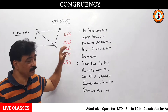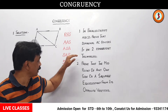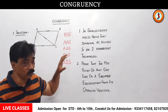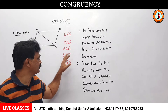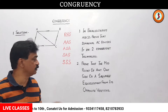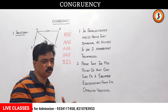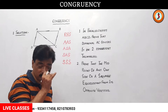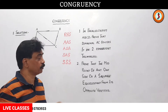AAS — angle, angle, side. ASA — angle, side, and angle, that is the side included between two equal angles. Then SAS — side, angle, side, the angle included between two equal sides. And SSS. Through the process of solving the sums you will also be able to understand these things.